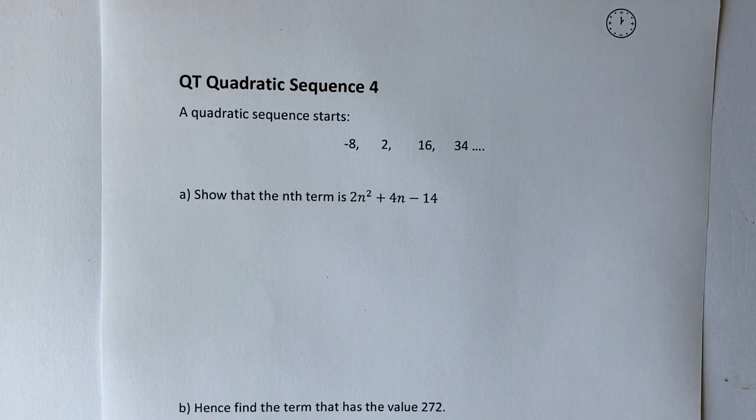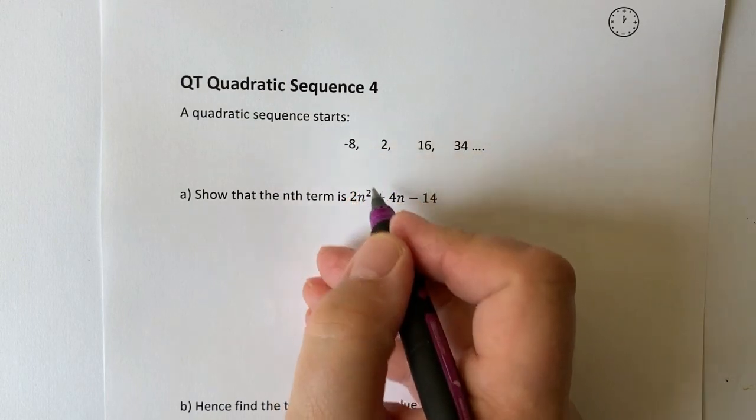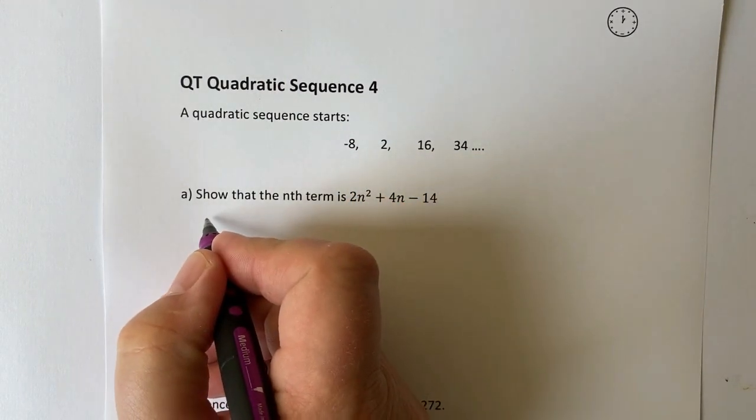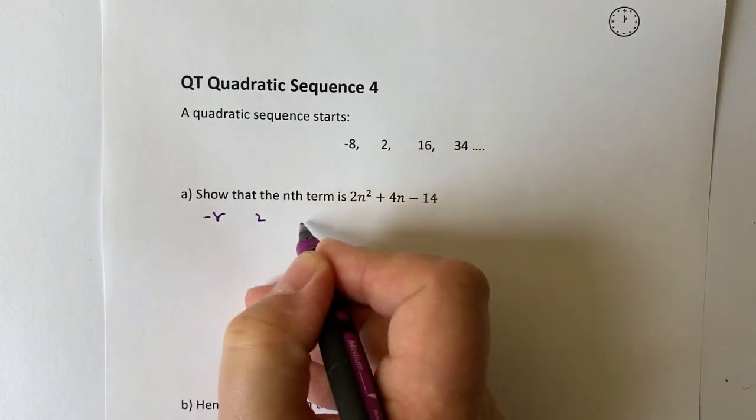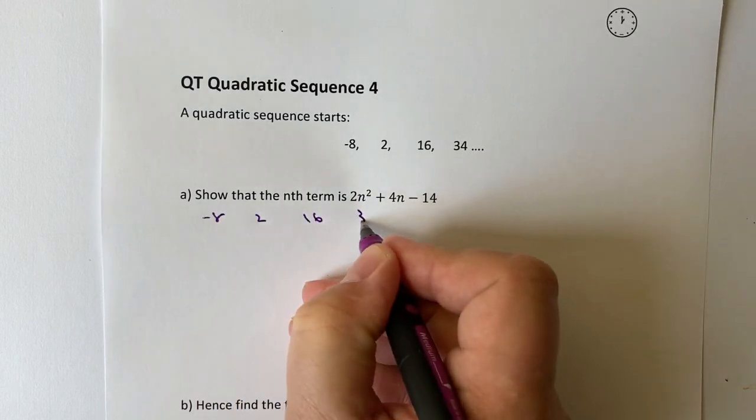Okay, so the first thing is that I have to determine that it's a quadratic sequence. Well, the reason I'm going to do that is if I look at the common difference. If I've got minus 8, 2, 16, and 34...